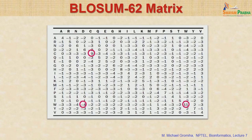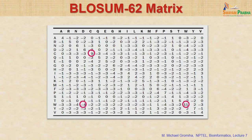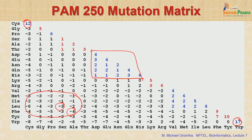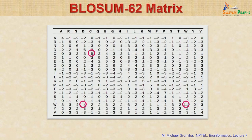Comparing the BLOSUM matrix with PAM: cysteine-to-cysteine is 9, tryptophan-to-tryptophan is 11 in BLOSUM. For a mutation like tryptophan-to-aspartic acid: in BLOSUM it is minus 4, while in PAM 250 it is minus 7. Both matrices qualitatively show similar trends — adverse substitutions are penalized in both.